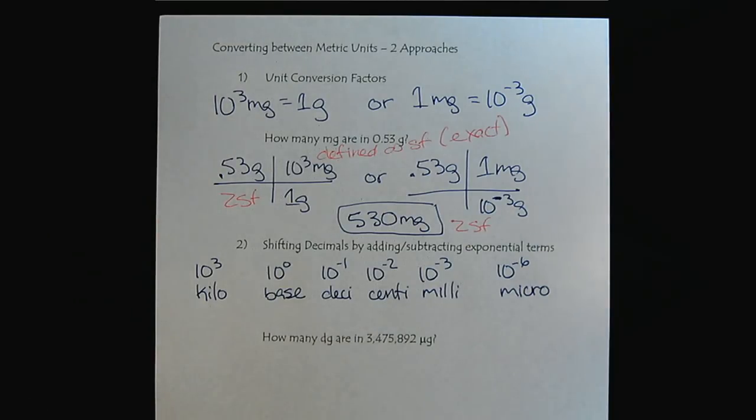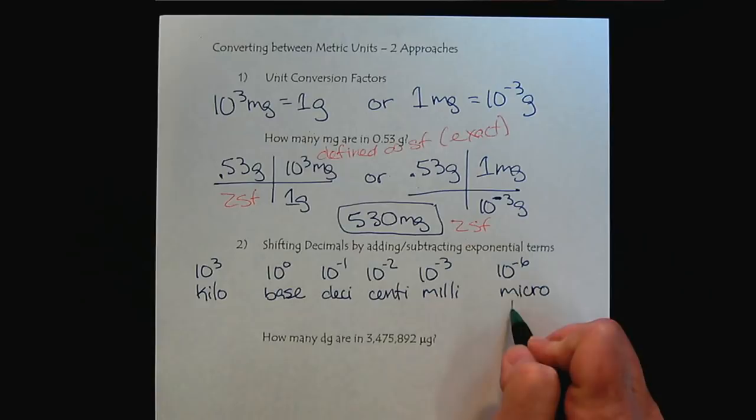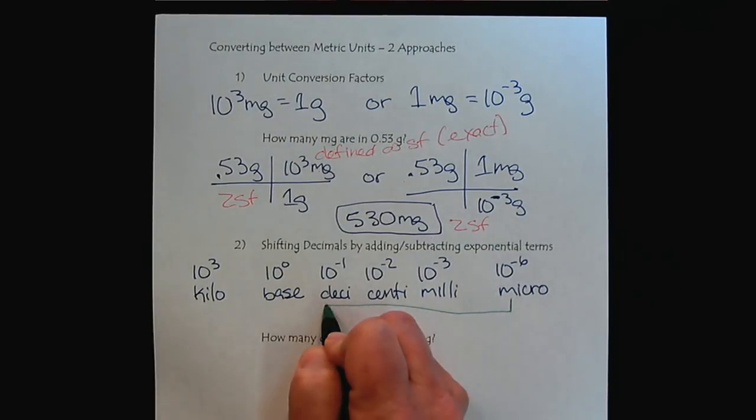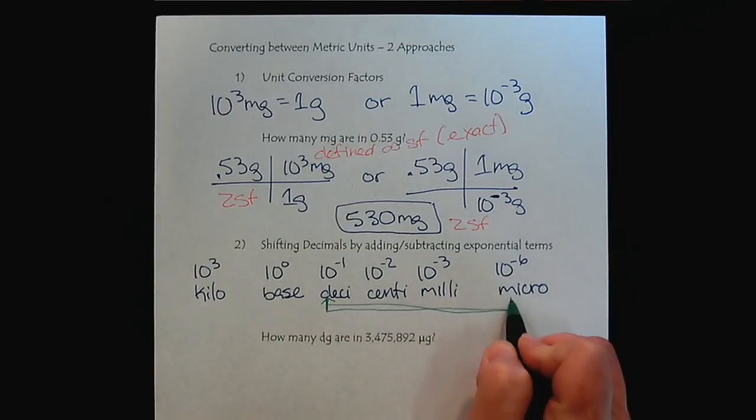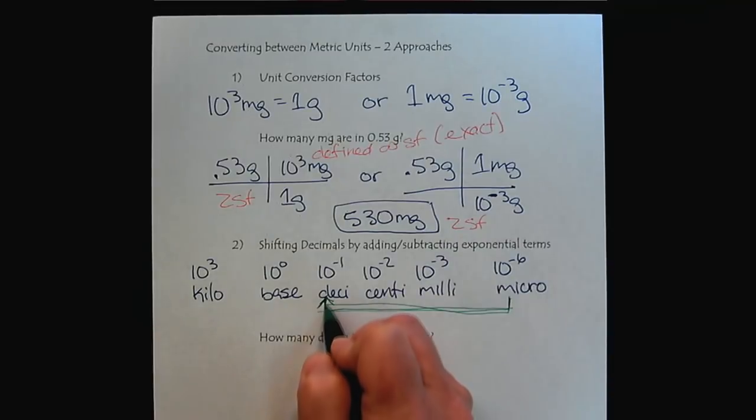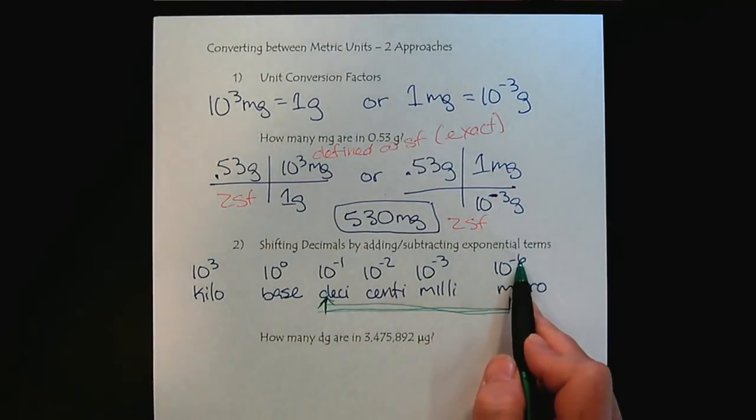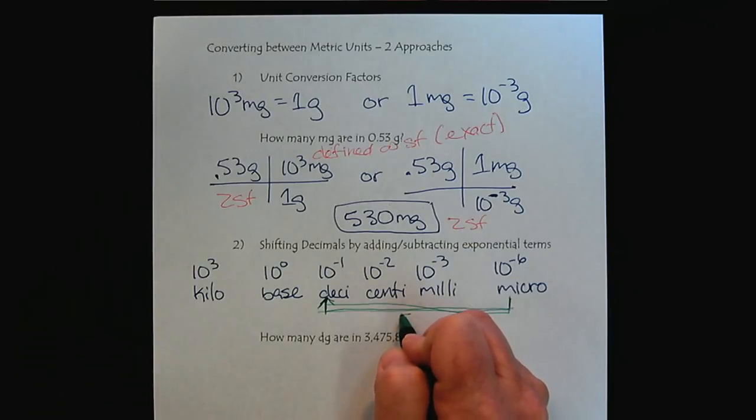How many decigrams are in 3,475,892 micrograms? So notice, we are starting here at micrograms, and we want to go to decigrams. So we are going to move here.